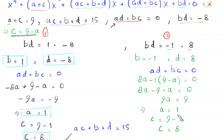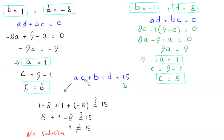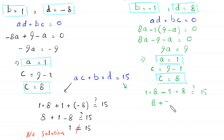So from this case we get a=1, b=negative 1, c=8, d=8. We check these values in ac plus b plus d is equal to 15: 1 times 8 plus negative 1 plus 8, which is 8 plus 7, equals 15. This is equal to 15, so this is true. It means that this case has solutions.